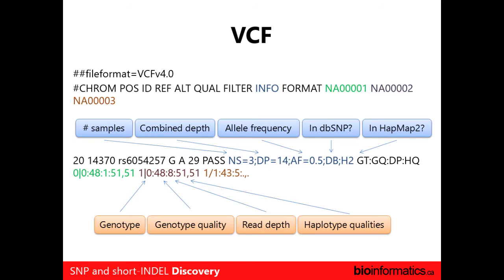It's not a typo. Usually in VCF files you'll see a slash separator, but a vertical bar means that variant has been phased — you actually know on which haplotype the respective alleles occur. So it would actually make a difference whether you have 1|0 or 0|1, because you've placed it on the appropriate haplotype.